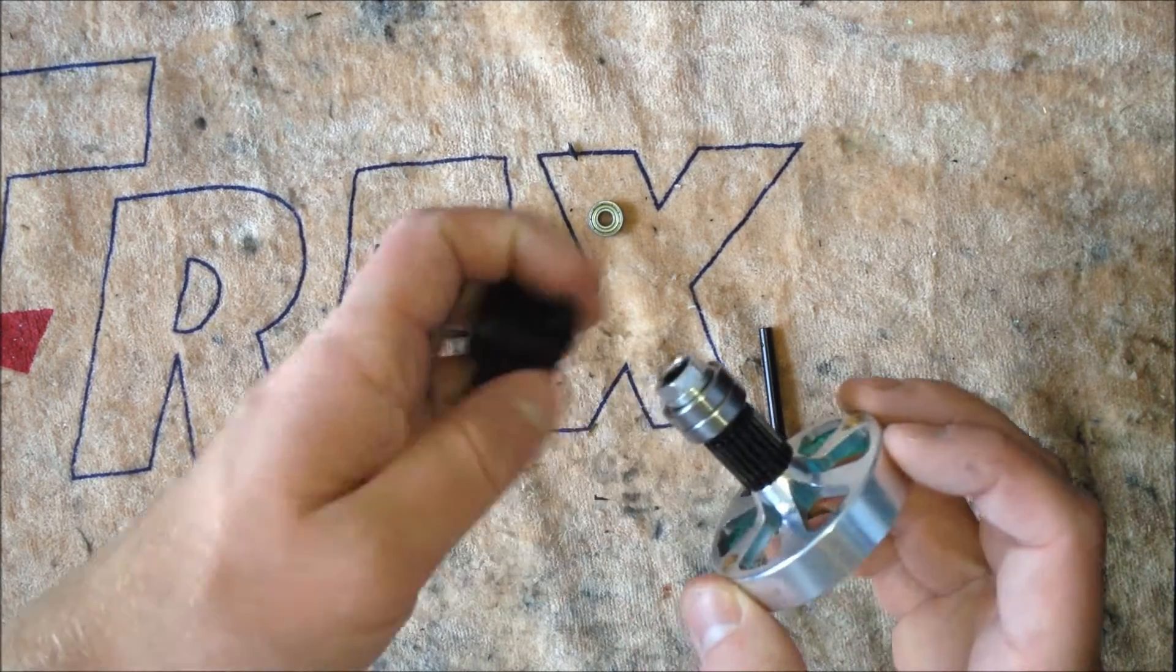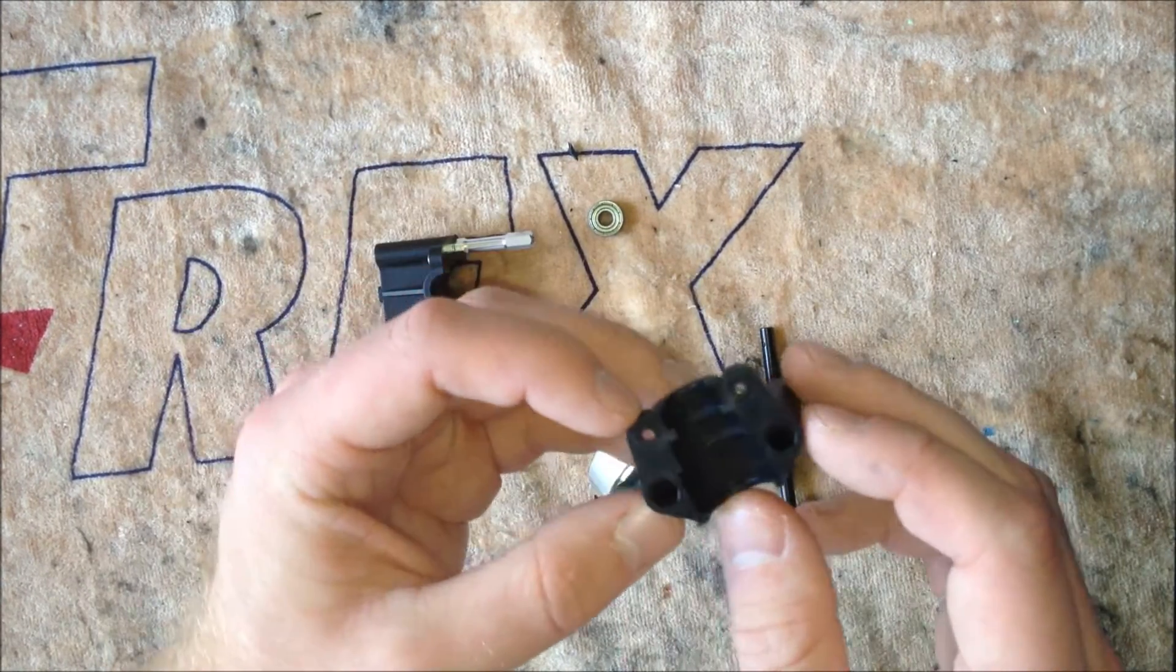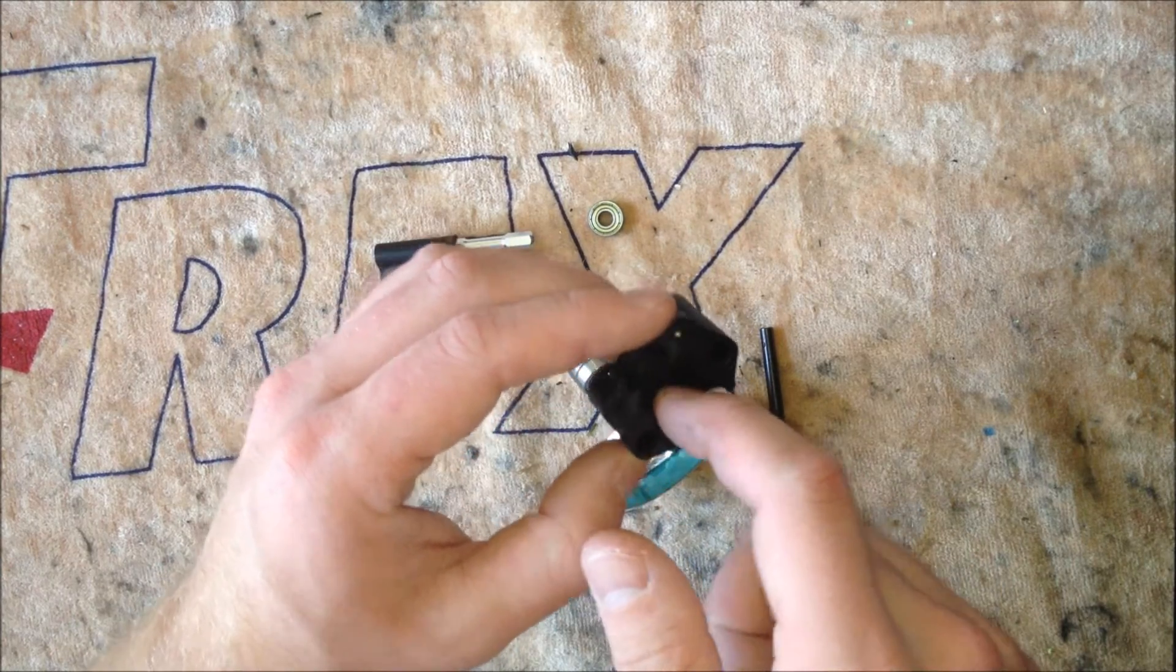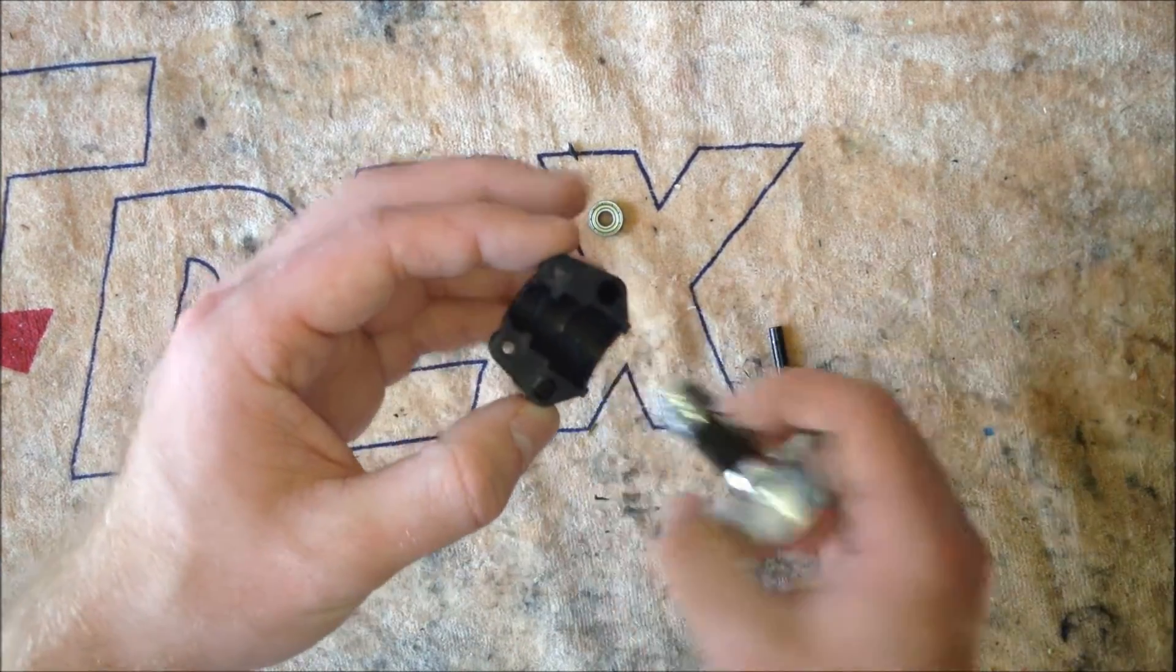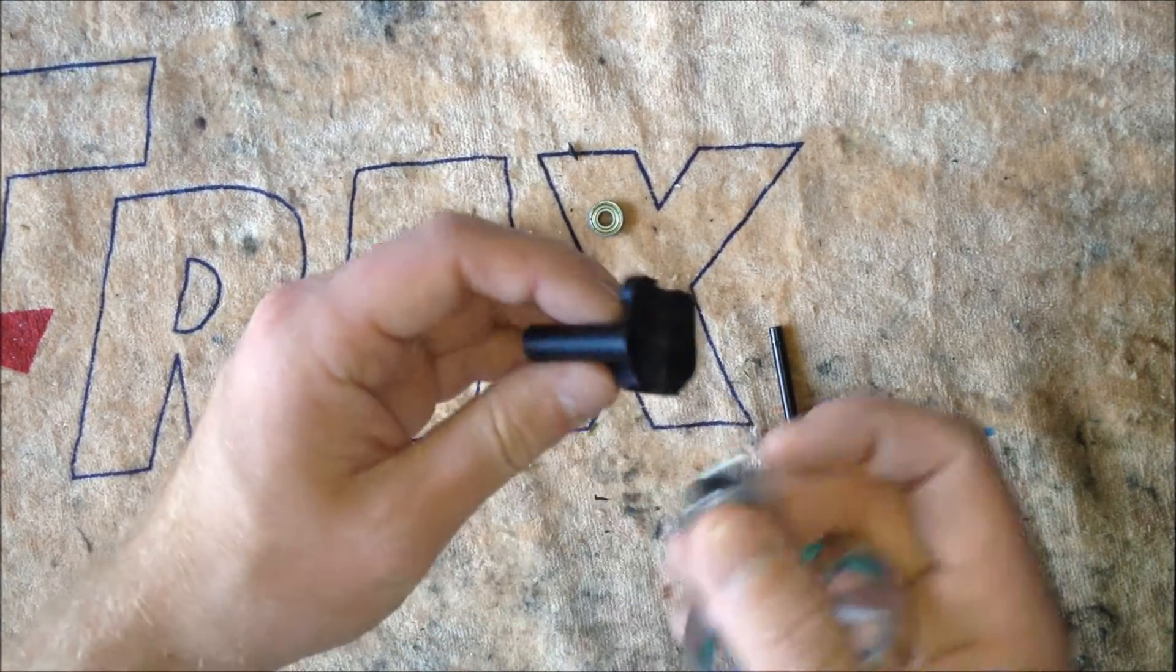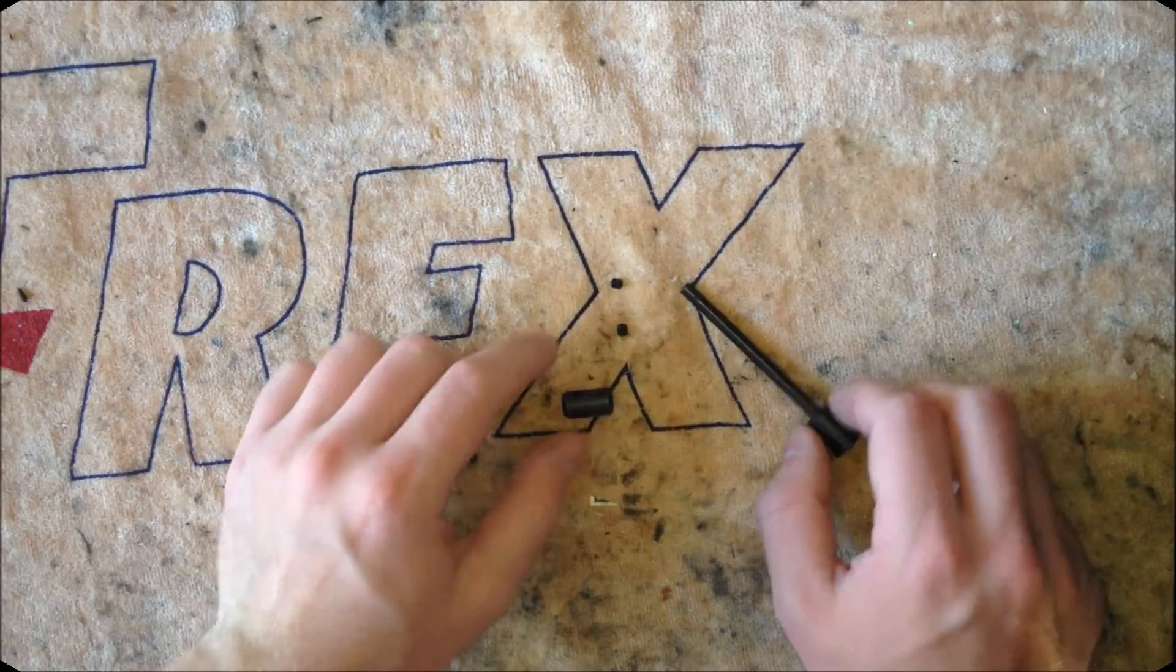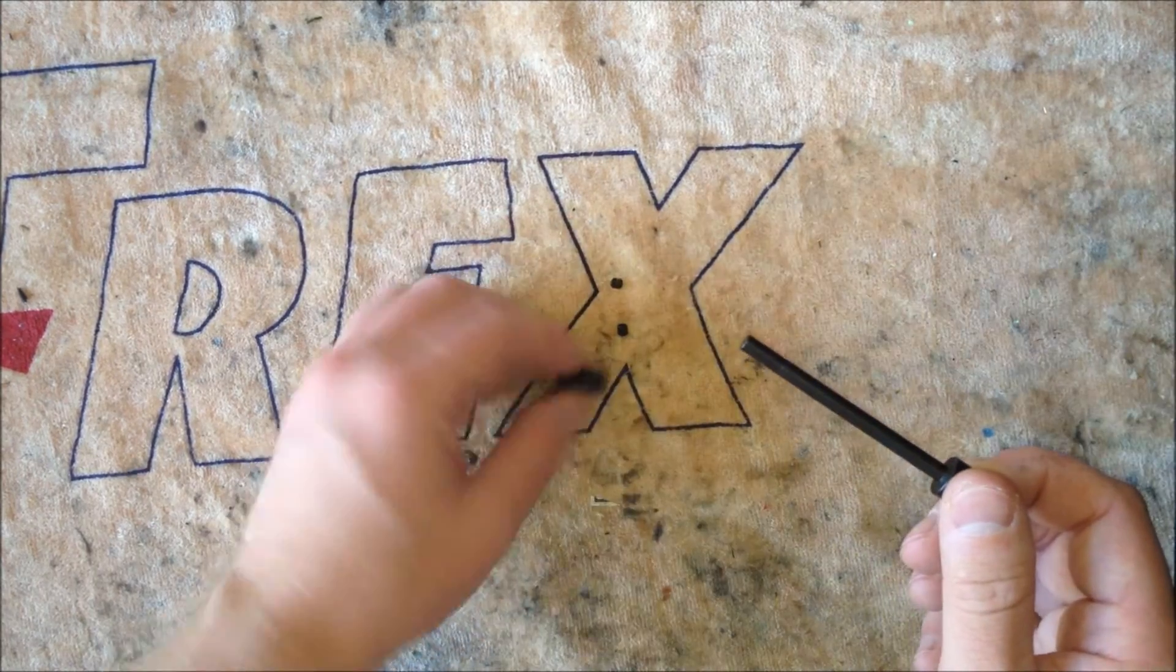Starting with the clutch bell here, one issue I want to go over that I see a lot is guys running way too large of a gap between their clutch and the clutch liner and clutch bell here. What happens when you have too large of a gap is the clutch shoes here, when you're spooling up, will have to extend out further, and over time this fatigues the material and can result in these shoes just cracking off. Some of the clutch bells with the old black Align liner really had a problem with that, because the liner was just way too thin.